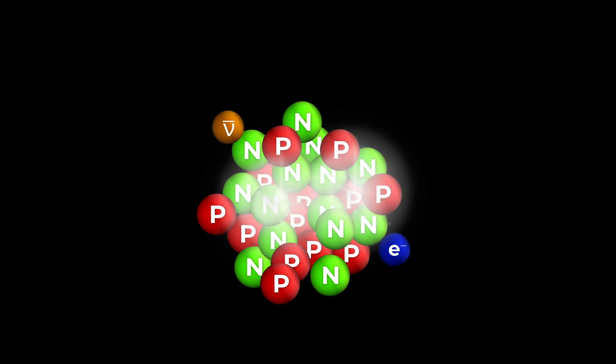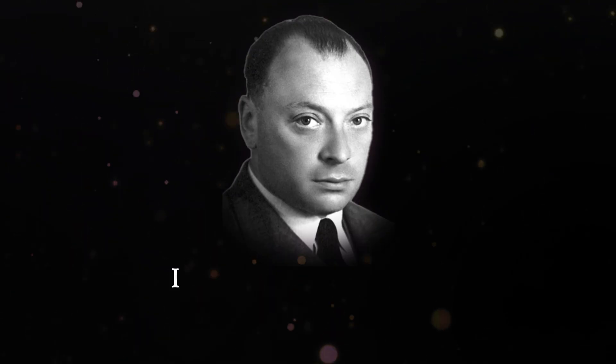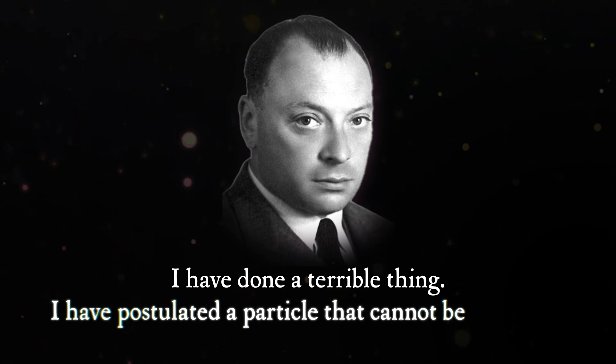His desperate remedy was to propose the existence of a counter particle, one that would offset the changes in energy and motion that he observed. Unfortunately, as Pauli put it, one should have seen these earlier if they really existed. He famously said, I have done a terrible thing. I have postulated a particle that cannot be detected.